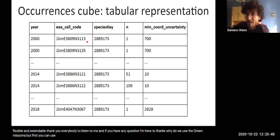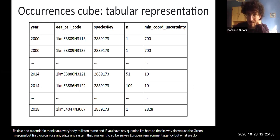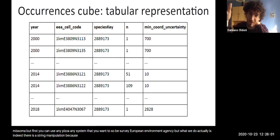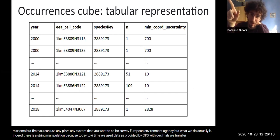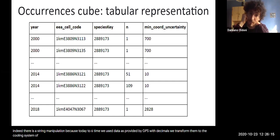But first, you can use any grid cell that you want, any system that you want. So this is a European Environmental Agency grid. But what we do actually is indeed a string manipulation. Because to save time, we use the data as provided by GBIF with decimals. We transform them to the coordinate reference system of EEA grid.